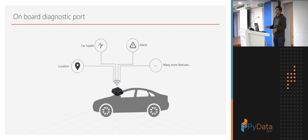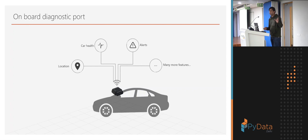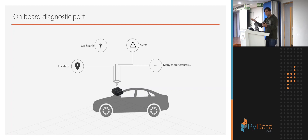The main component we will talk about is the ECU, which provides data via different protocols — CANPEN and others — and exposes the data via the OBD port. OBD port is the on-board diagnostic port. Hopefully everyone drives a car and has seen a port on the right-hand side of the steering wheel — that's the OBD port.